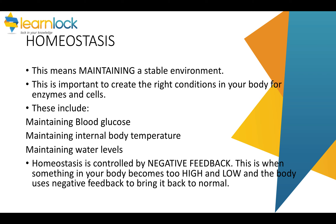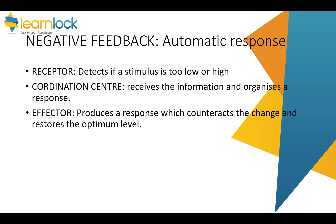Homeostasis is controlled by a process called negative feedback. Receptors in your body detect if something is too low or too high. Your brain then receives this information and coordinates a response. Effectors in the body produce this response, which counteracts that change and brings the levels back to an optimum level. We'll look at negative feedback later when we examine blood glucose levels.